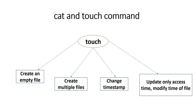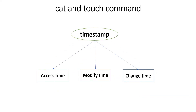The touch command is used to create an empty file. We can create multiple empty files using touch command. We can also see details like access time, modify time, and change time with the help of touch command. If we want to only update the access time we use touch -a, and if we want to update only the modify time we use touch -m. Now we will cover all these things practically.